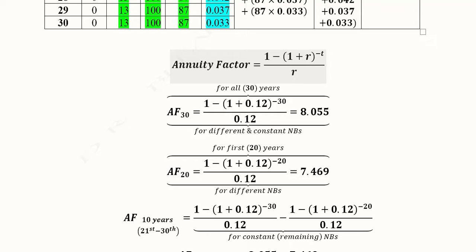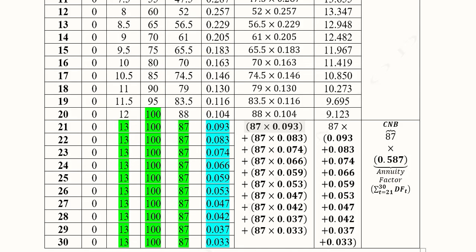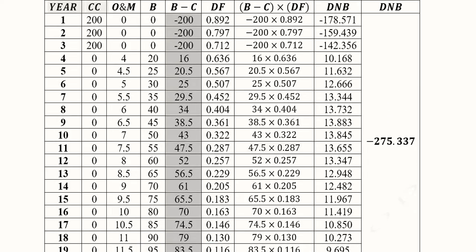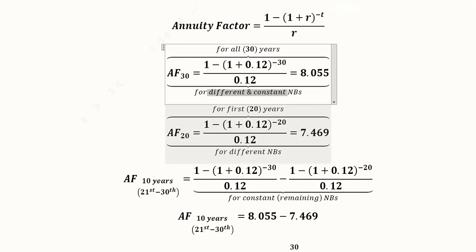This has to be calculated as a difference. For 30 years we calculate it first by putting the values — you can pause the video to verify. It is for 30 years, which is why t equals 30. It includes all net benefits — both those that are different and those that are constant or common. They are constant for the later years and different for the first 20 years, so this component includes all of them.